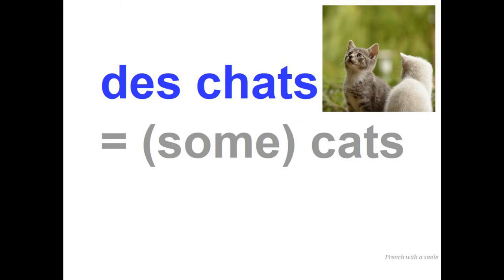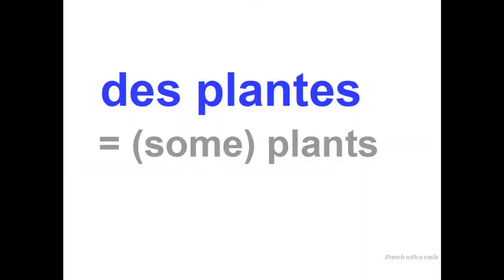Now that we have the determinant, we can go over to the plural. Sometimes in English we say 'cats' or 'some cats.' In French, we always use des for that instance. Des chats means 'cats' or 'some cats.' Des chats. Together: des plantes. Des plantes. Together: des plantes.